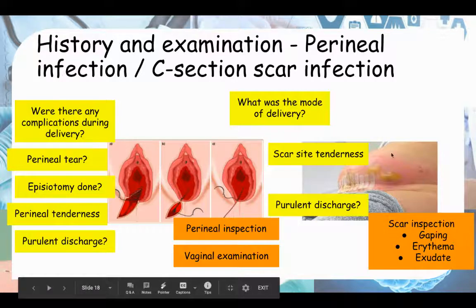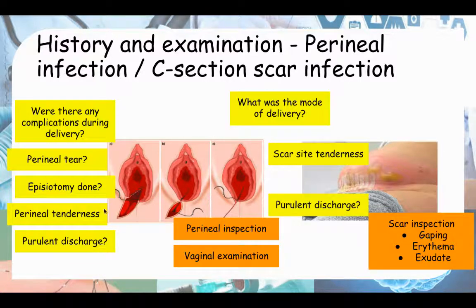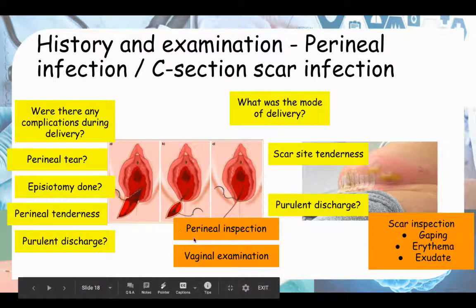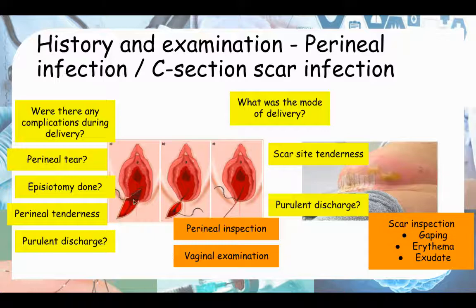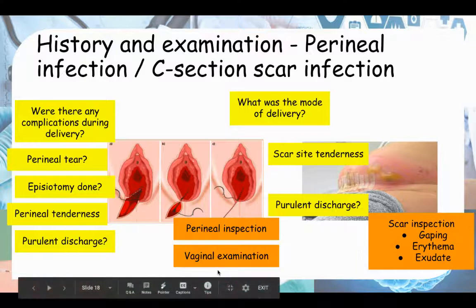On physical examination, if it's a C-section scar, inspect the scar — you might see gaping, redness, or exudate. If it's the perineum, do an inspection of the perineum and look at the episiotomy scar or perineal tear for redness, swelling, or discharge. If there is a high vaginal tear, you may need to do a vaginal examination to find it.